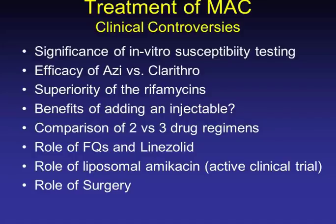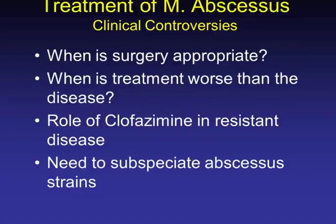Clinical controversies include: azithromycin is generally better tolerated than clarithromycin; when is it beneficial to add an injectable like amikacin; and liposomal amikacin — there is an active clinical trial at the VA. For abscessus: when is surgery appropriate, when is treatment worse than the disease, and if you have macrolide-resistant disease, you essentially have disease you're not going to win — at best you hold it at bay. The use of clofazimine remains under discussion; its availability is limited because it remains critical for Hansen's disease treatment. When is it appropriate to subspeciate the abscessus strains?